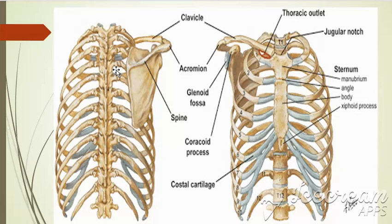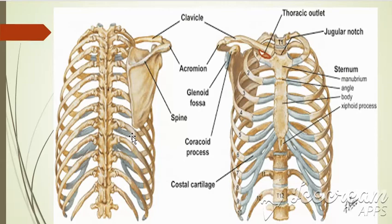The 7th thoracic spine lies at the level of the inferior angle of the scapula. This is the inferior angle of the scapula, and it lies at the level of the 7th thoracic vertebral spine. Up to here, the discussion covers the bony landmarks of the thoracic vertebra.